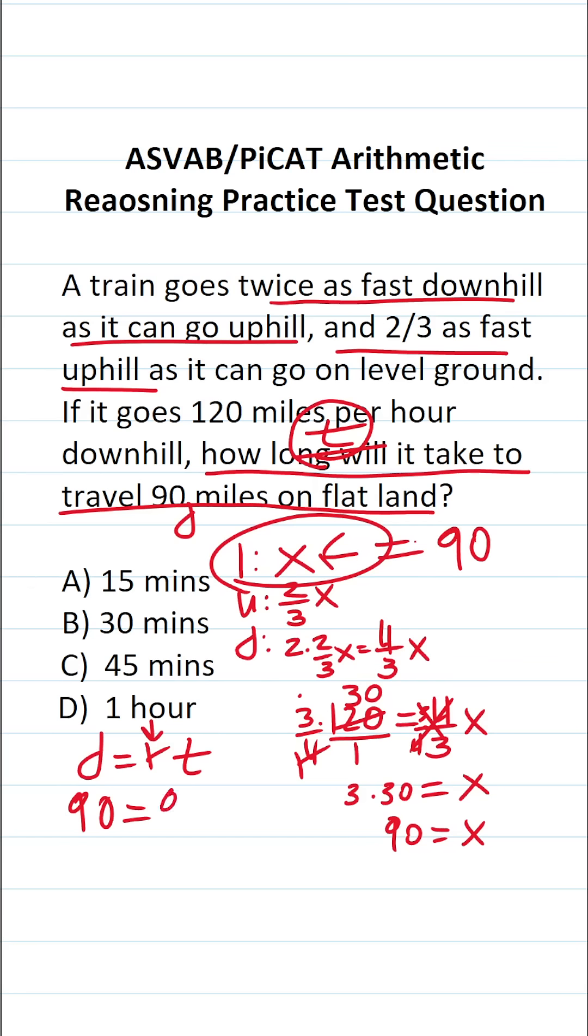So this becomes 90 equals 90T. To solve for T, all we have to do is divide both sides of the equation by 90. Now, this crosses out. This says T equals 90 over 90, which is one. So in other words, it's going to take this train one hour to cover 90 miles on flat land.